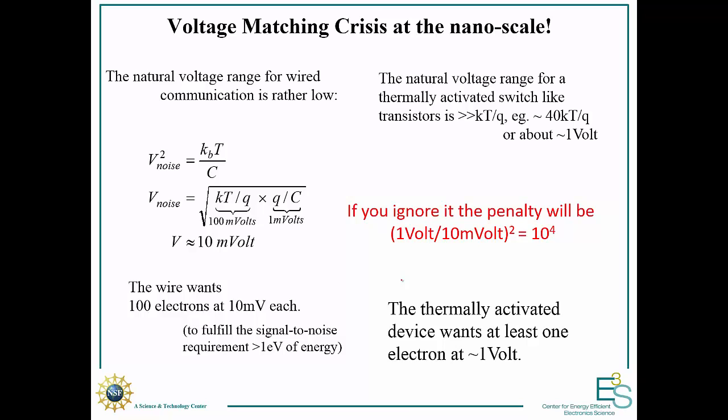The question is, why is that? It comes down to a voltage matching crisis at the nanoscale. What's the noise voltage on a wire? We look at kT over C noise, put in the capacitance of a typical wire, and find it comes out to around 10 millivolts. The wire wants around 100 electrons at 10 millivolts, just to fulfill our signal to noise energy requirement of 1 eV. But our transistors are still operating around 1 volt. Since our power is CV squared, we have a huge penalty: 1 volt over 10 millivolts, or 10 to the 4x penalty, because we're driving our wires at a volt when they only want 10 millivolts.